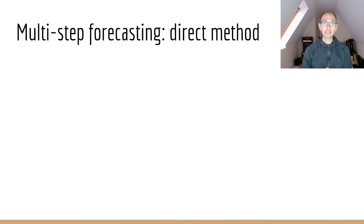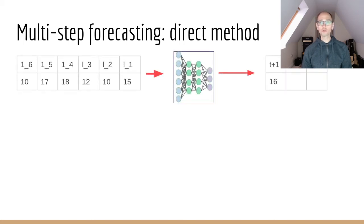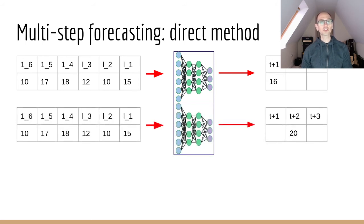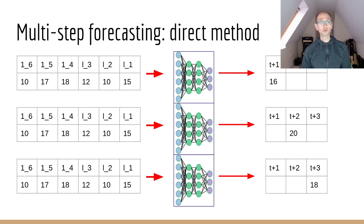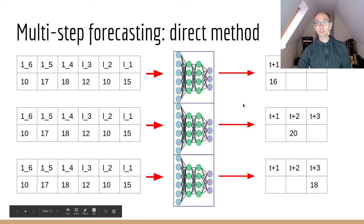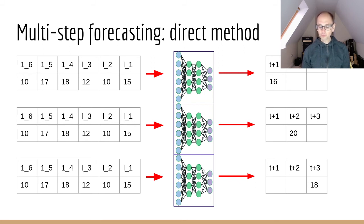The second approach we could take is called the direct method. In the direct method, what we do is we build multiple forecasting models. For example, if I wanted to forecast three steps into the future, I would build three forecasting models. I would build one model that would take an array of input data and output a forecast one time step into the future. I'd build a second model that would take the same input data and then forecast two steps into the future. We can see with this data, we just simply concatenate these arrays and we've got our array of forecasts into the future. That's great, nice and simple.